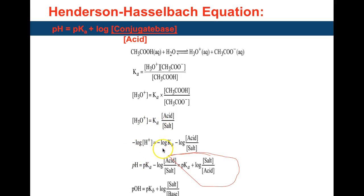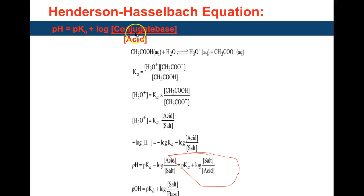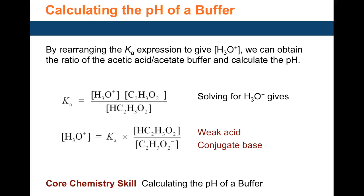Taking the negative log of H3O+ gives pH, and taking the negative log of Ka gives pKa, since 'p' means negative log. So pH equals pKa plus the negative log of the acid-to-salt ratio. To make the log term positive, you invert the fraction — salt goes on top and acid on the bottom. This form is called the Henderson-Hasselbalch equation.